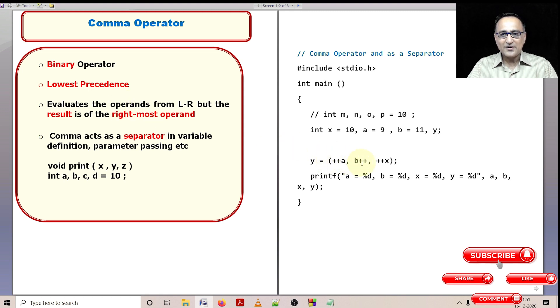Operands are evaluated from left to right, but the value of the rightmost operand gets assigned to y. In this case, 11 gets assigned to y.